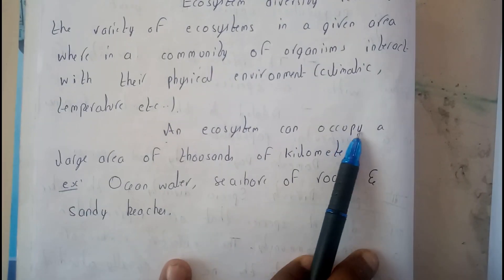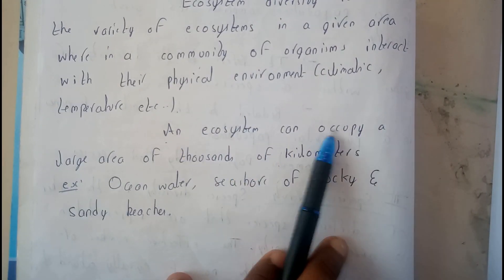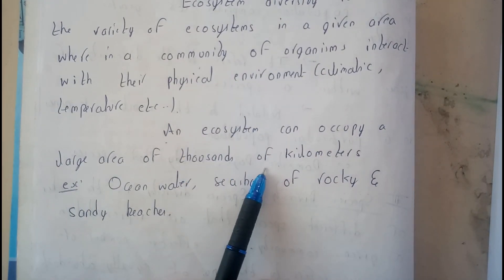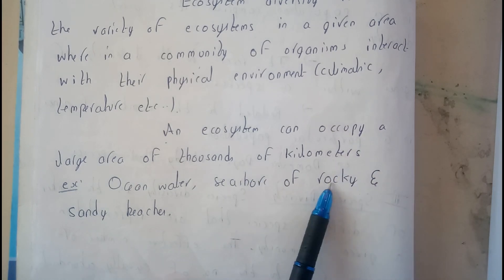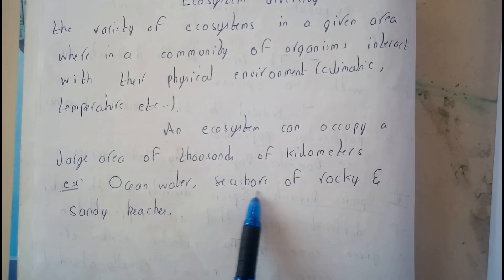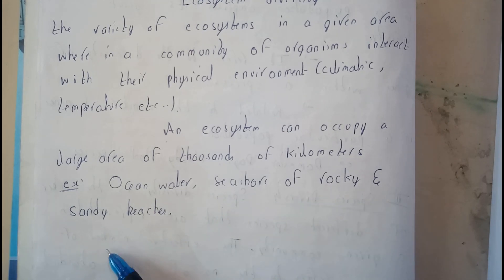An ecosystem can occupy a large area of thousands of kilometers. Examples include ocean water, seahorses of rocks, and sandy beaches.